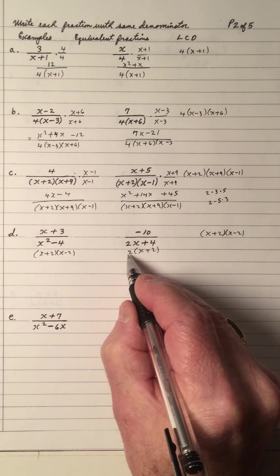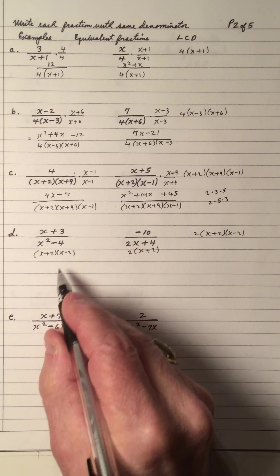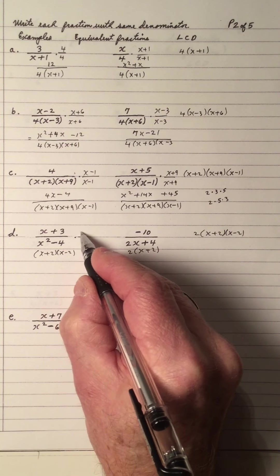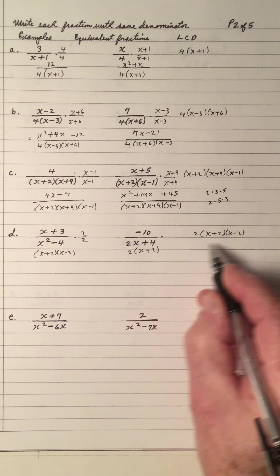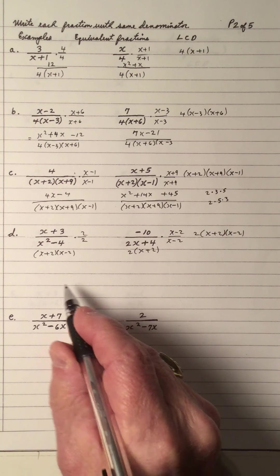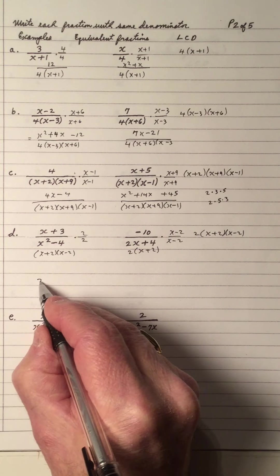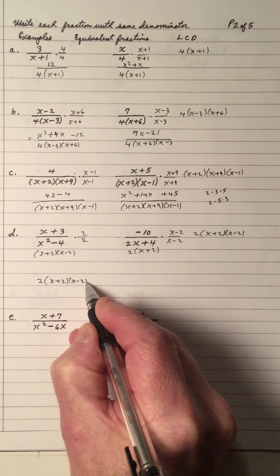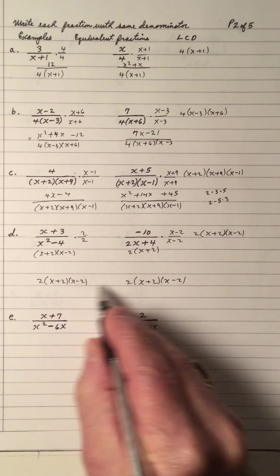Got to be this one. And what's in this one that's not here? A 2. So I have an x plus 2, x minus 2, and I need to multiply it by 2 over 2. Over here I have a 2 and an x plus 2 — I need an x minus 2. So when I multiply, I'm going to use whatever I have here and put it right here. So this is 2 times x plus 2 times x minus 2; this is going to be 2 times x plus 2 times x minus 2.